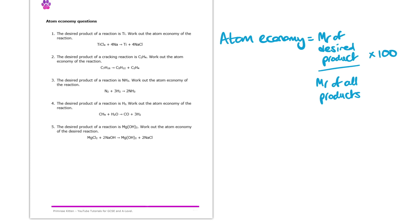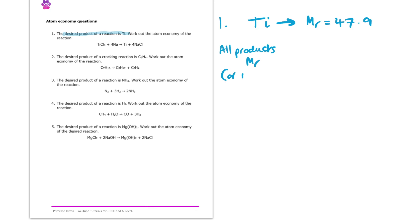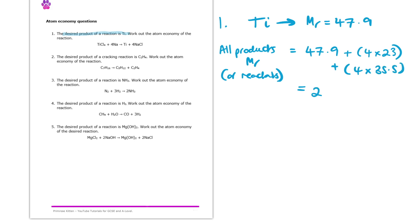Let's have a look at question one. Looking at question one, we're told that the desired product of the reaction is titanium. If you look at the balanced equation, you'll see that there's just one mole of titanium, so the MR for that is just going to be equal to 47.9 — that number you'll find on the periodic table as the atomic mass. Now we need the MR of all of the products. So here what we will get is that 47.9 of the titanium, plus four NaCls. So we're going to do four times 23 for the Na, plus four times 35.5 for the chlorine. Putting that all together in the calculator, we end up getting 281.9.